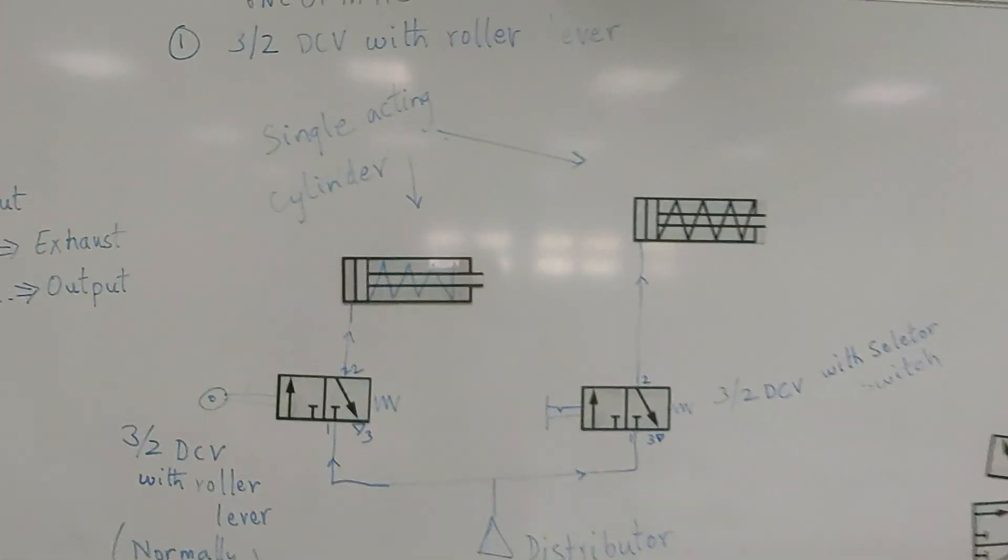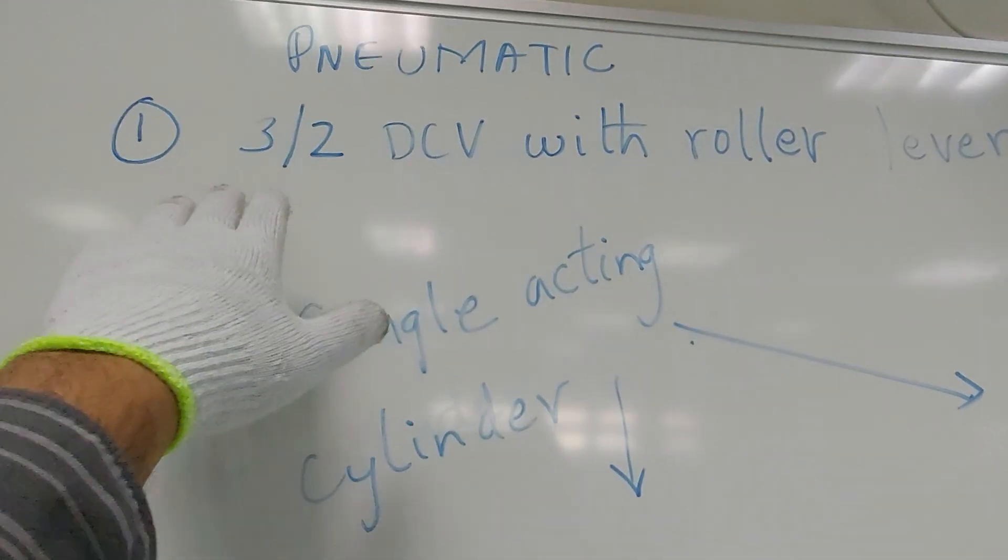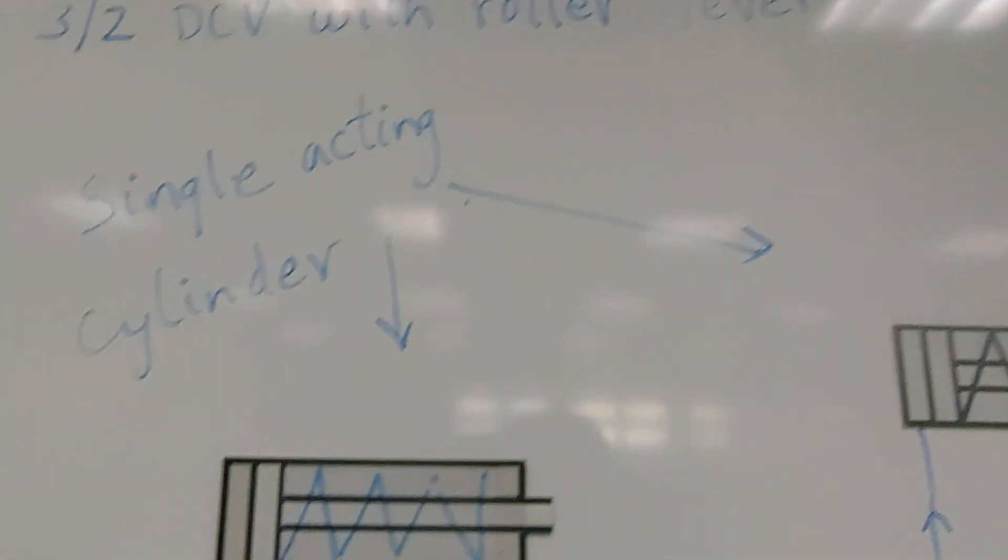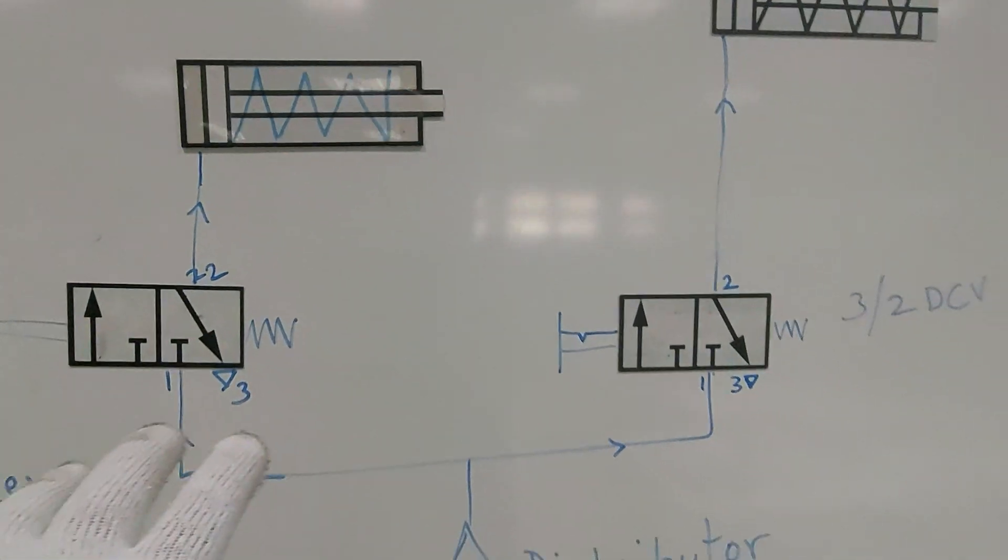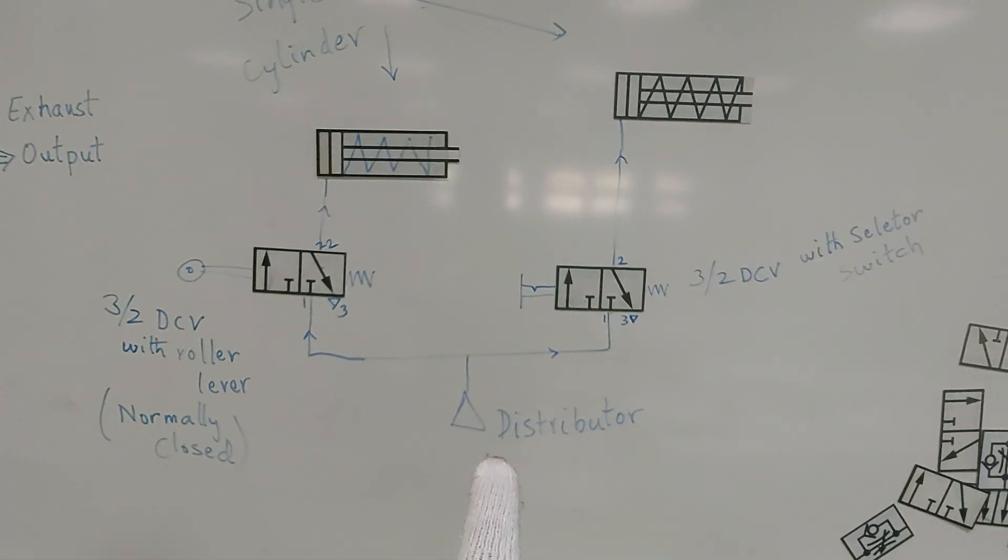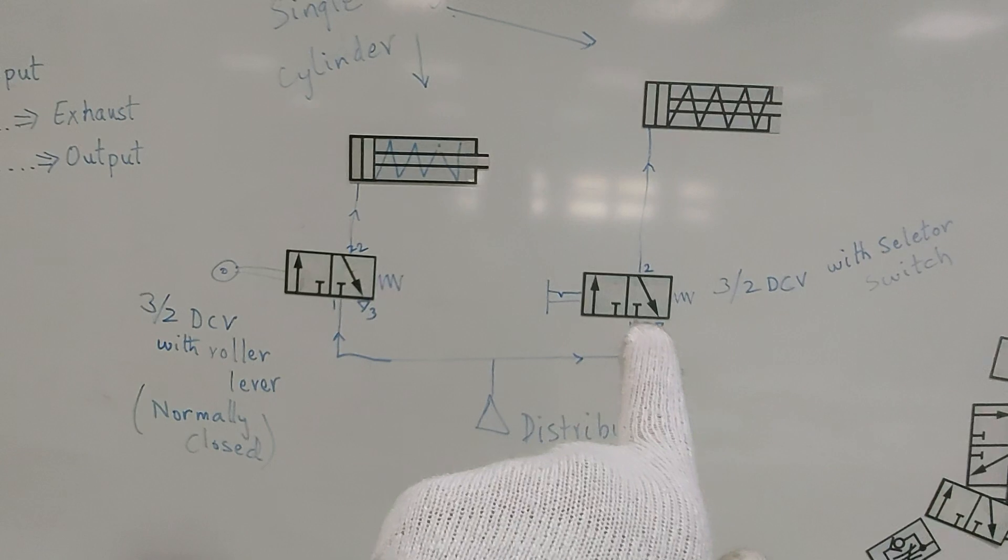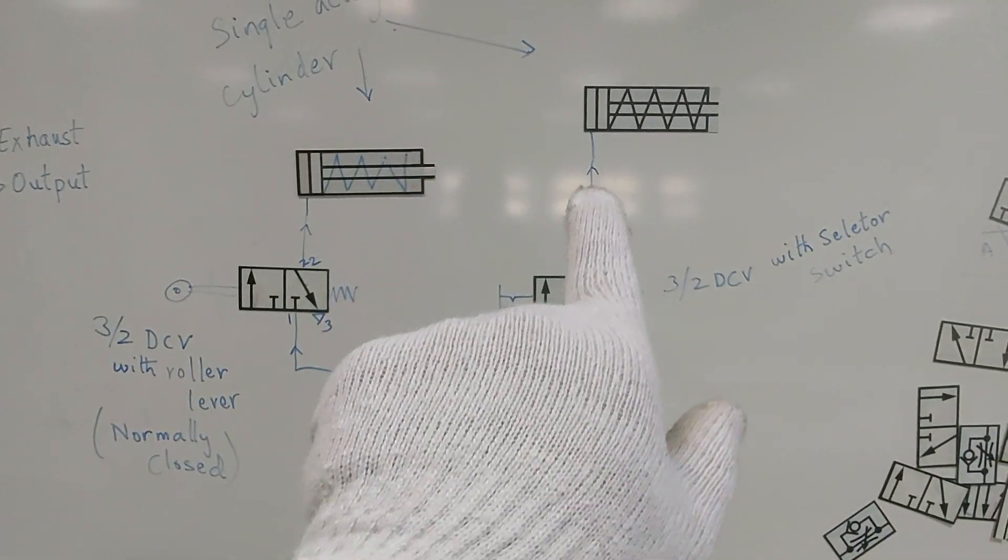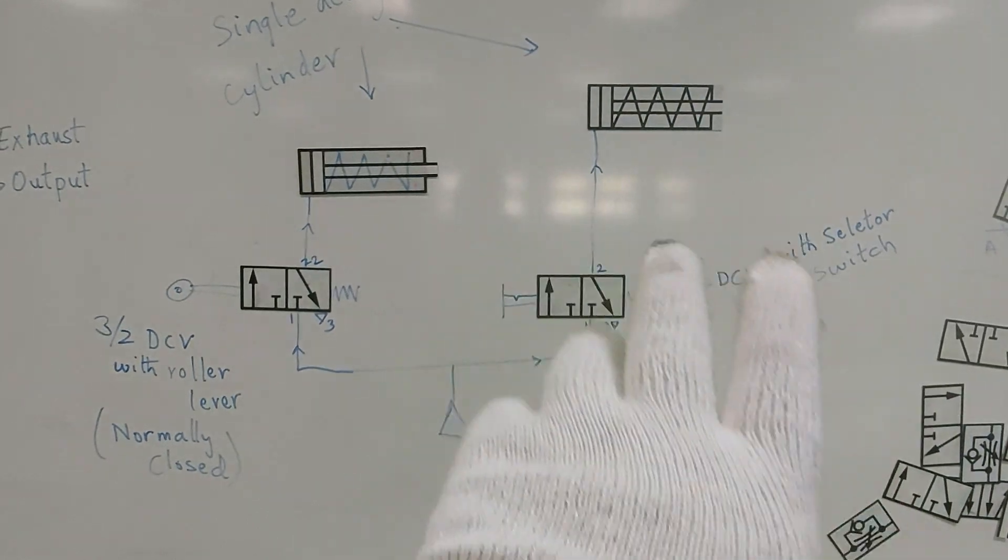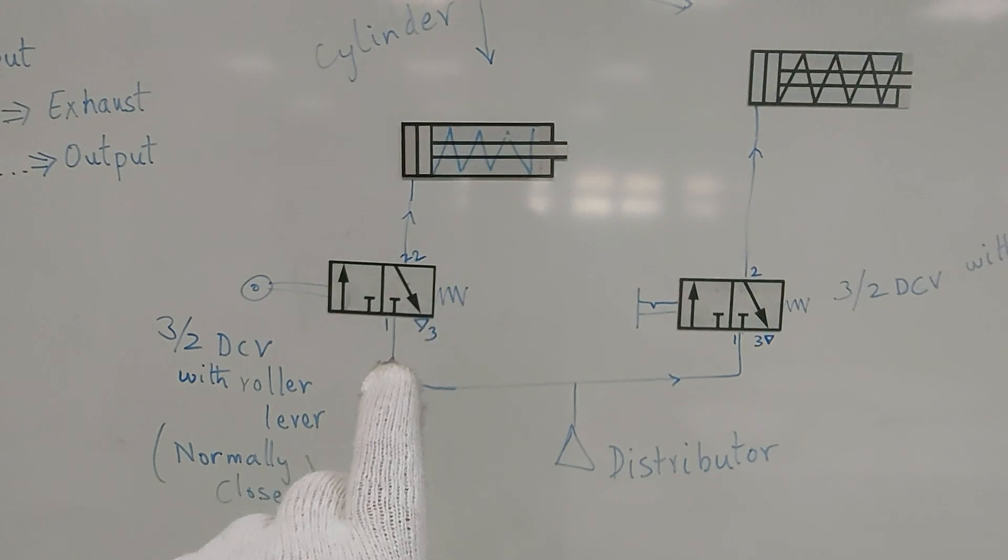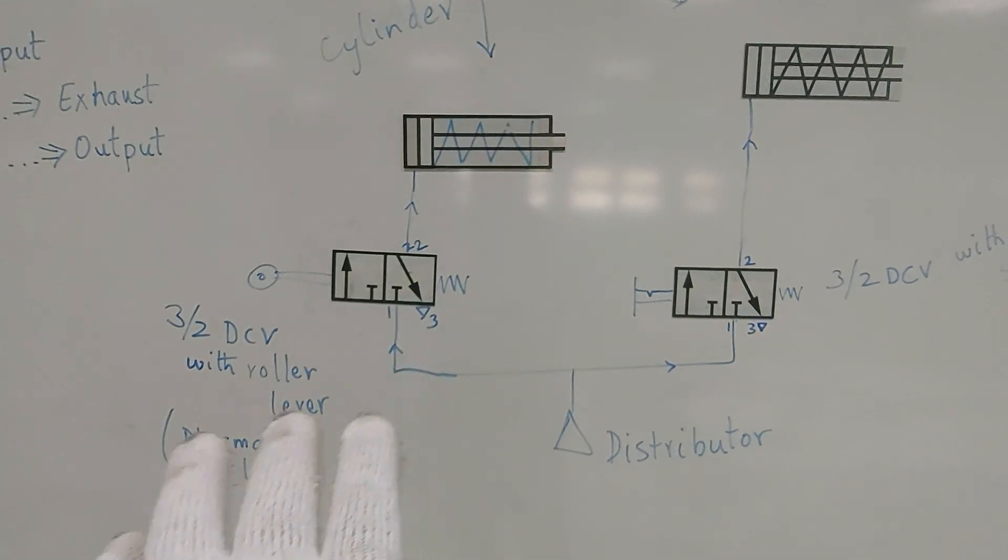For today, we have a 3/2 DCV with roller lever. How do we connect and use this? The distributor is connected to a 3/2 DCV with selector switch and goes to a single cylinder. The distributor is again connected to this 3/2 DCV roller lever, which is normally closed, and goes to a single cylinder.